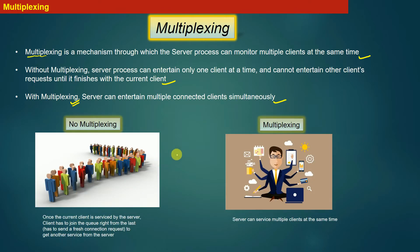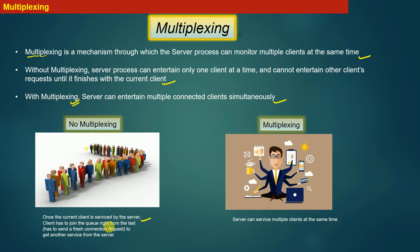The following pictures demonstrate the concept of multiplexing and what happens when you don't have multiplexing. On the left-hand side you can see a long queue — while the person at the front of the queue receives the service, all other persons standing behind him have to wait for their turns. Once the person at the front receives the service, if he wishes to receive the same service again, he has to join the queue right from the back. This situation is equivalent to the situation where once the current client is serviced by the server, the client has to join the queue right from the last.